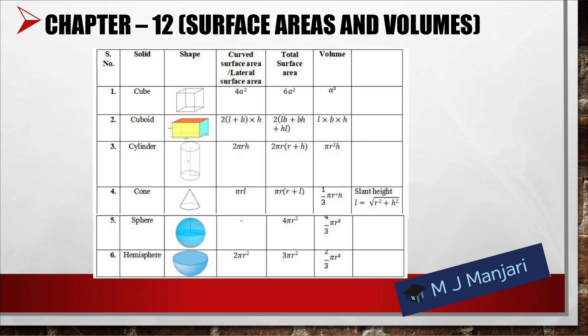For a sphere: total surface area = 4πr², volume = (4/3)πr³. For a hemisphere: curved surface area = 2πr², total surface area = 3πr², and volume = (2/3)πr³.